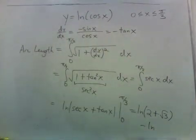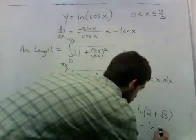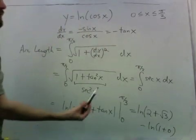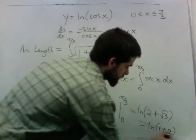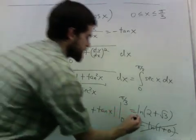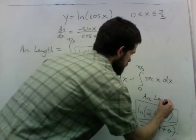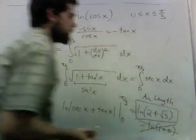Minus natural log secant of 0 is 1 and tangent of 0 is 0. So the bottom is just natural log of 1 which is 0. So the final answer is this. Thank you.